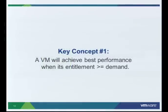That leads us to our first key concept: a VM will achieve its best performance when entitlement is greater than demand. This makes sense — entitlement is how much physical RAM a VM gets, and demand is what the VM wants to use. It's essentially its working set — what it's trying to do. So as long as that working set is in physical RAM, it'll run as best as it can.